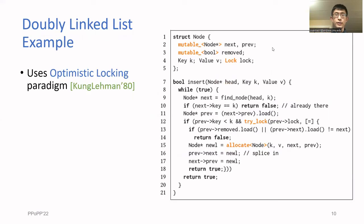To see a concrete example, this is how you would implement a lock-free doubly linked list using our library. The details of the code are not important, but the main takeaway is that it looks a lot like how you would use normal locks. The calls to the library are highlighted in orange in the pseudocode. The doubly linked list here uses a technique called optimistic locking, which dates back to Koen and Lehman in the 1980s.